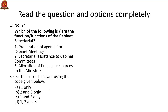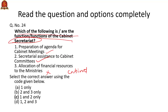Read the question and options completely. Which of the following are functions of the cabinet secretariat? Usually you read about cabinet committees and cabinet secretary but not cabinet secretariat. By logic you can answer. One — preparation of agenda for cabinet meetings — yes. Secretarial assistance — maintaining and providing documents for decision making in the cabinet. Allocation of financial resources to the ministries — this is done by the cabinet committee on economic affairs or by the cabinet, not by the cabinet secretariat. By logic, allocation of financial resources is not done by a secretariat; only secretarial work will be done. So the answer is C — 1 and 2 only.